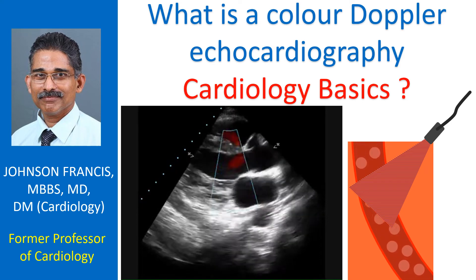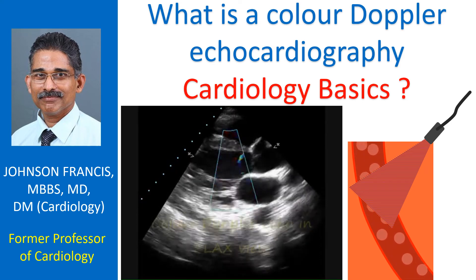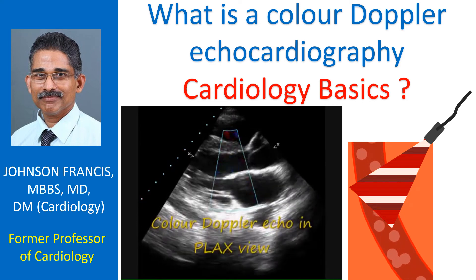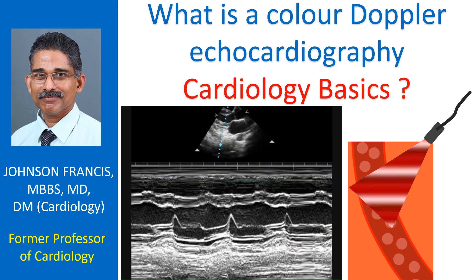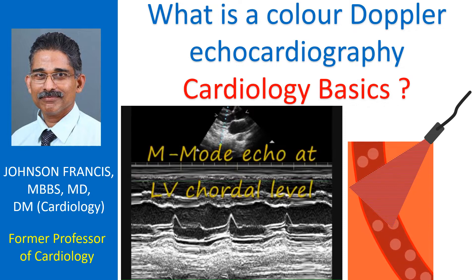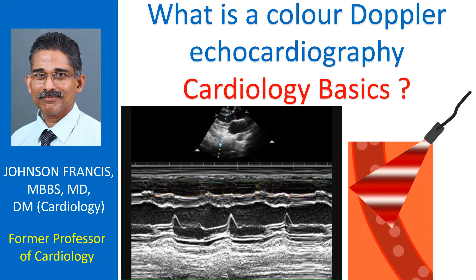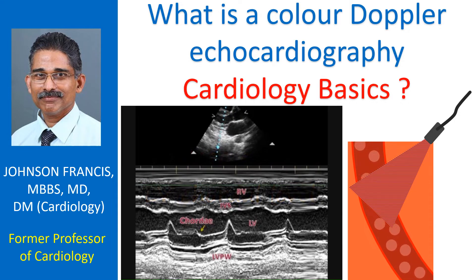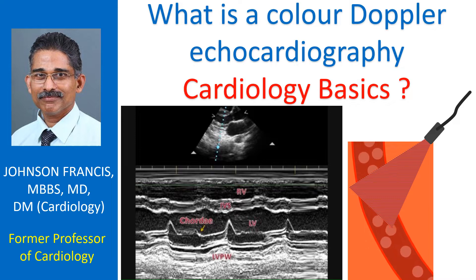A usual color Doppler echocardiogram is the superimposition of color Doppler images on a two-dimensional echocardiogram. Color M-mode is the superimposition of color Doppler images on an M-mode echocardiogram.